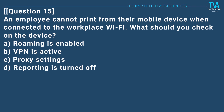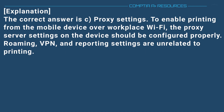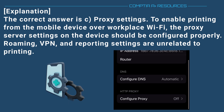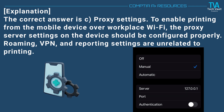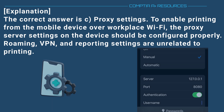Question 15. An employee cannot print from their mobile device when connected to the workplace Wi-Fi. What should you check on the device? The correct answer is C. Proxy settings. To enable printing from the mobile device over workplace Wi-Fi, the proxy server settings on the device should be configured properly. Roaming, VPN, and reporting settings are unrelated to printing.